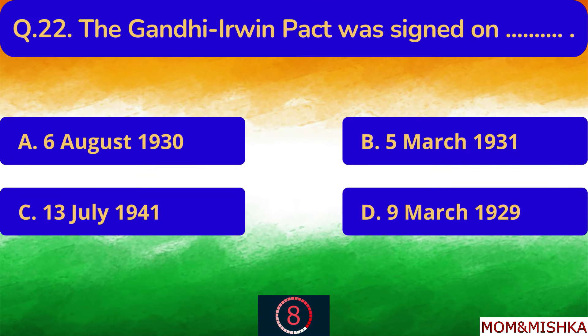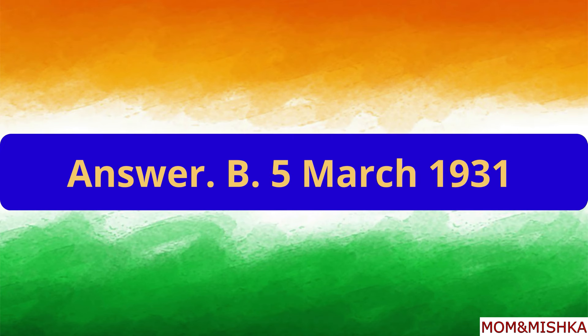The Gandhi-Irwin Pact was signed on blank. On 5th March 1931. Option B.